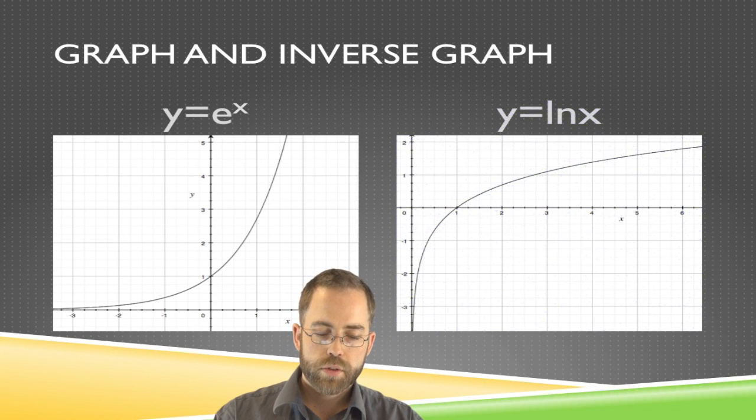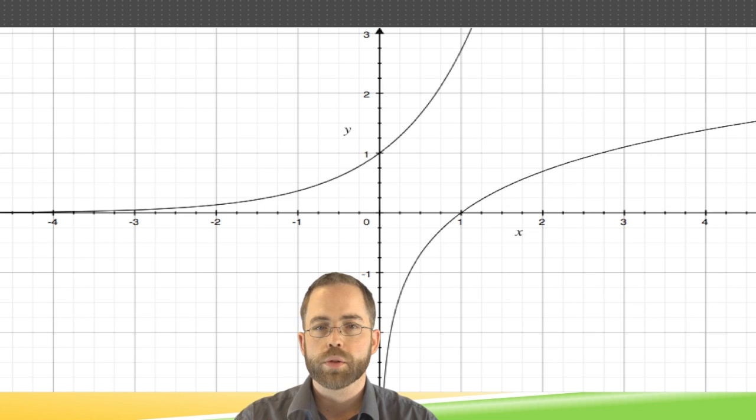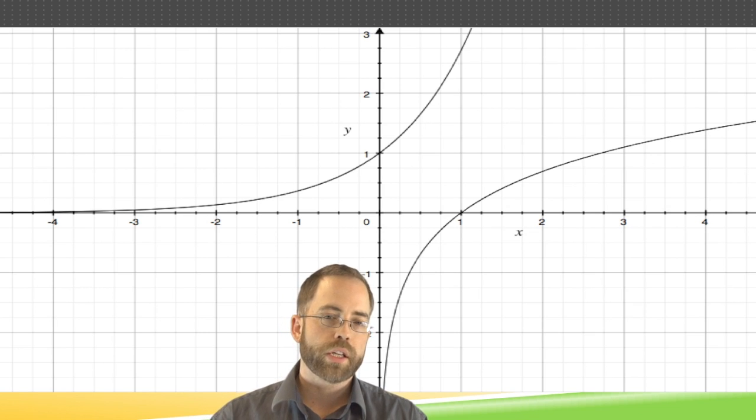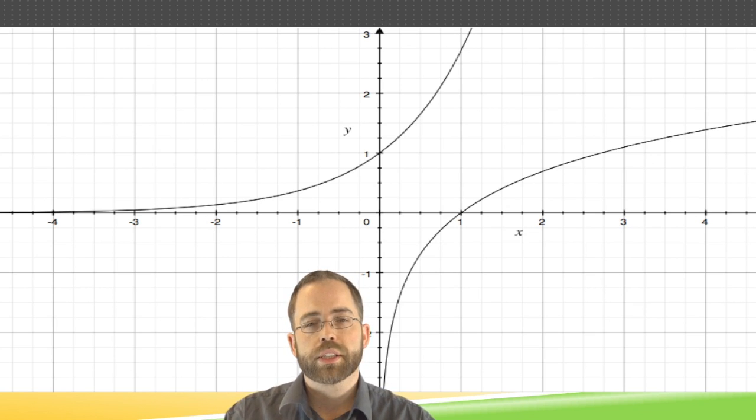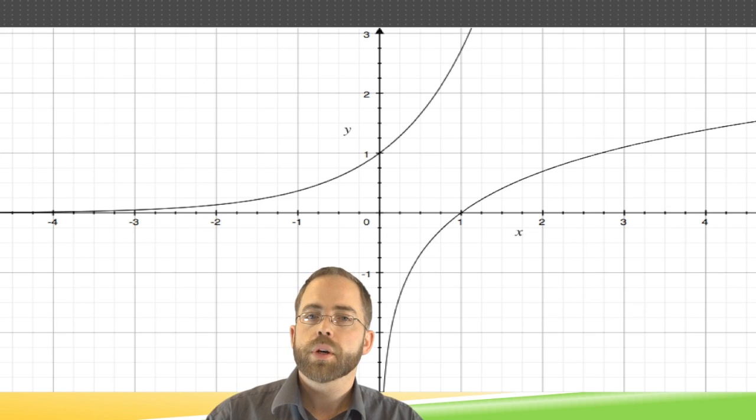So e to the x and ln x are the same graphs as each other, just reflections over the line y equals x. If you held a mirror up to the line y equals x, these are just bounces off of each other. On the e to the x graph, you've got 0, 1. On the ln graph, you've got 1, 0. On the e to the x graph, you've got 1, e. On the ln graph, you've got e, 1. Most importantly, visually, for e to the x, there's an asymptote at y equals 0. For ln x, there's an asymptote at x equals 0. The asymptote is one of the most defining features about these graphs.